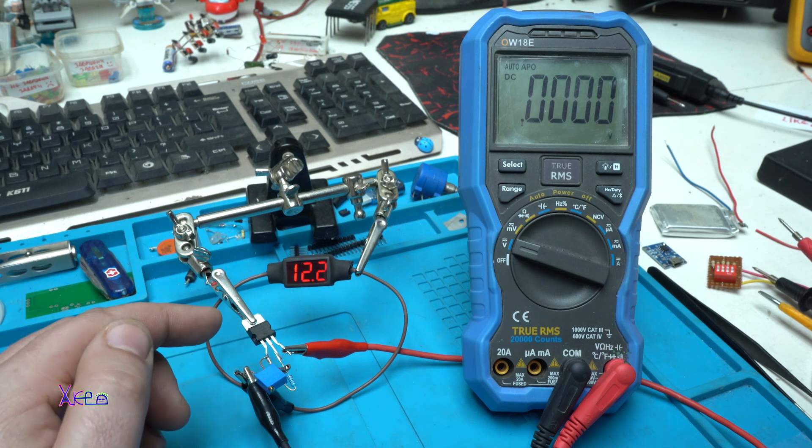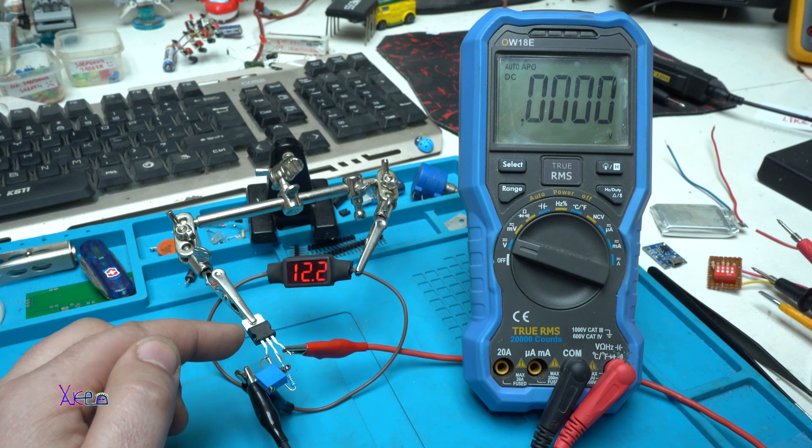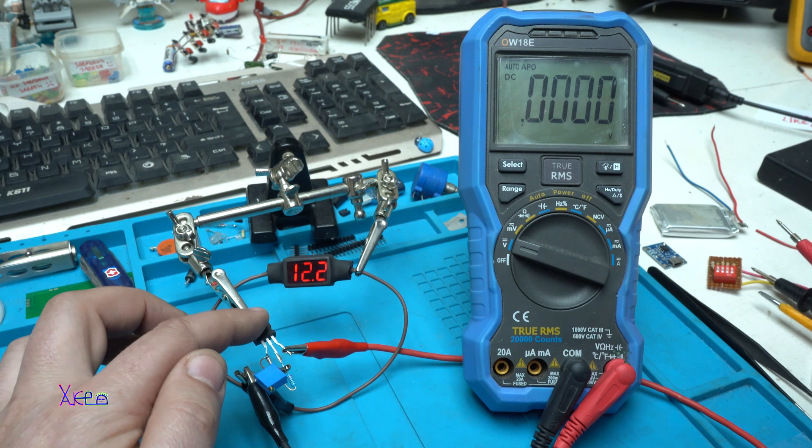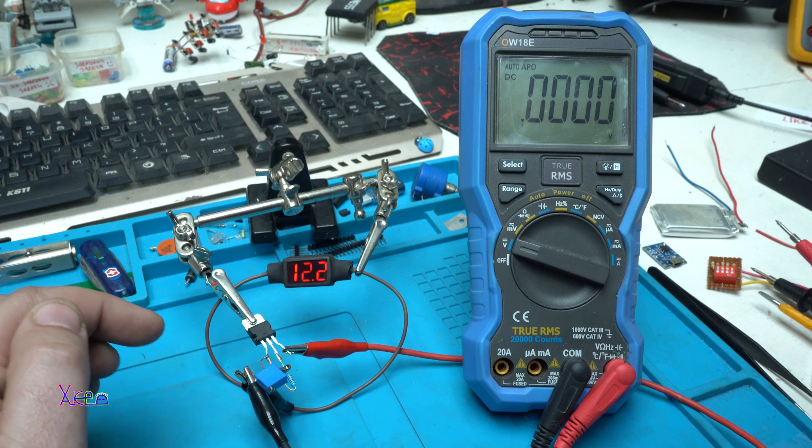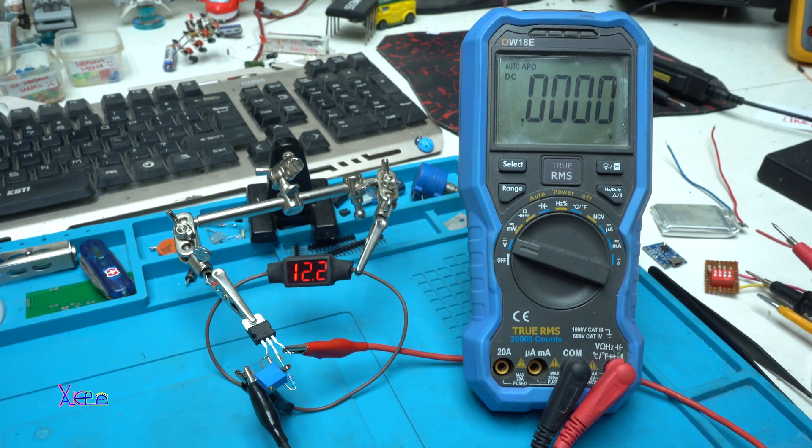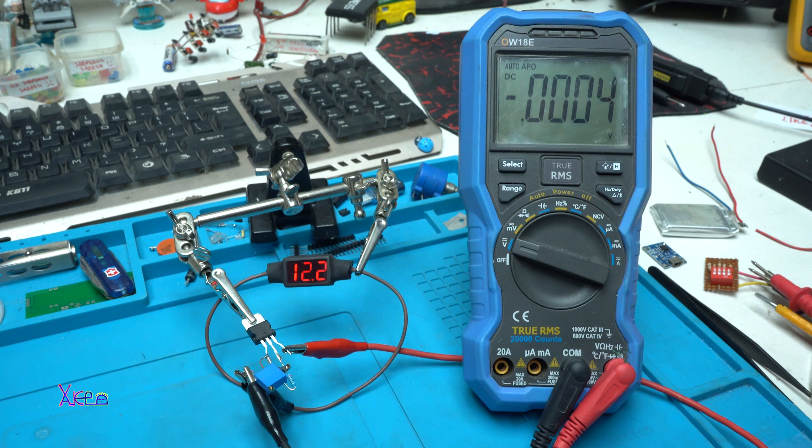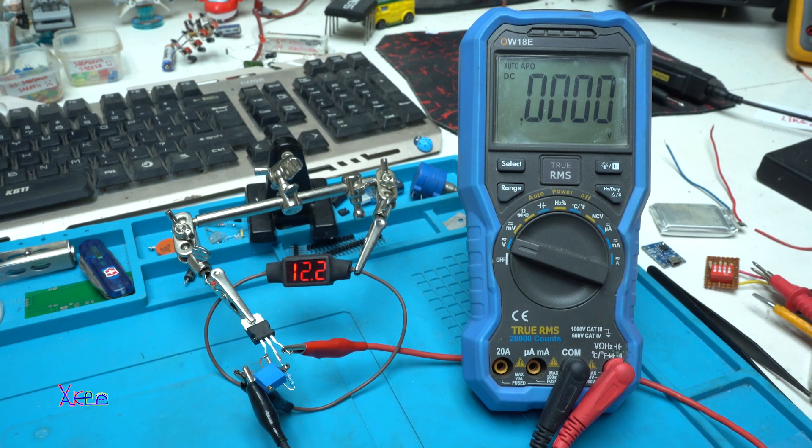You can make a simple voltage regulator using how many components? One, two, three. Three electronic components to make an adjustable voltage regulator from 1.2 volts I think to maximum 30 volts.